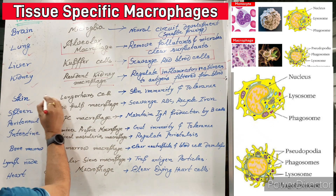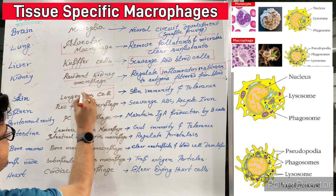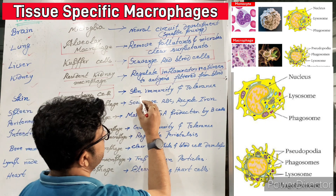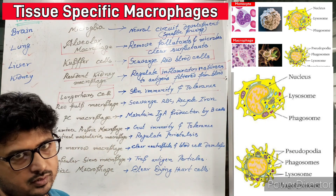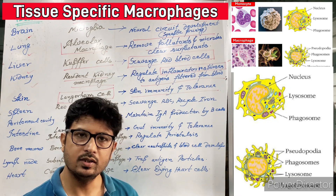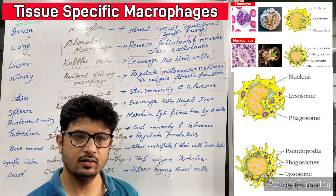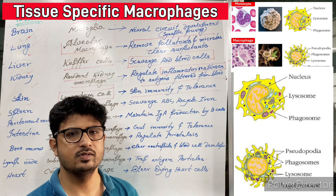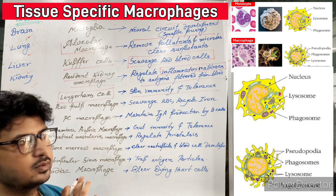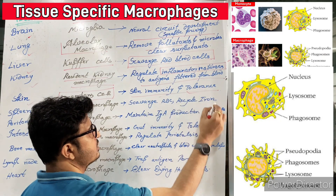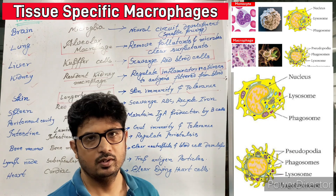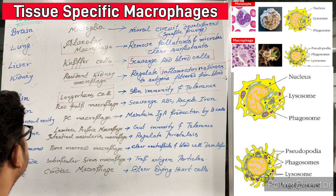Now coming to the skin — these macrophages are called Langerhans cells. Langerhans cells maintain skin immunity and tolerance. Any cut or wound through which a pathogen tries to enter, or any infection — the first immune response is given by these Langerhans cells. So they handle any kind of immune and tolerance responses in the skin. Tolerance will be covered in a separate class.